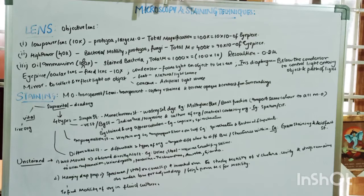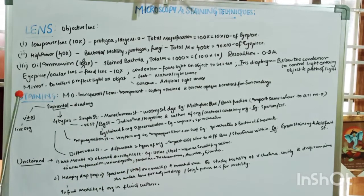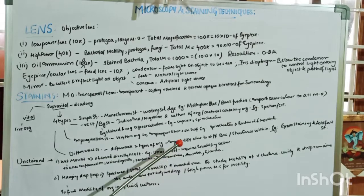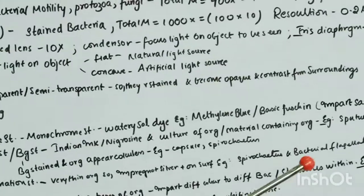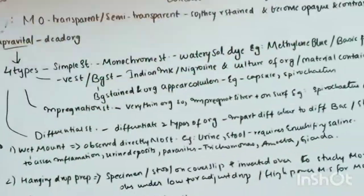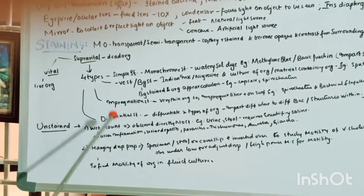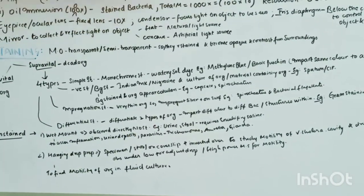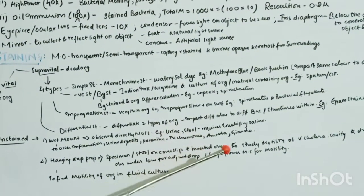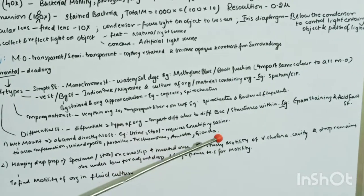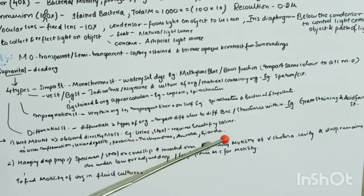Some preparations are unstained, like wet mount and hanging drop preparation. Wet mount is where the specimen is placed directly on a slide without any staining — for example, urine and stool, where stool requires normal saline spray. Wet mount is used to assess inflammation, inflammatory cells, deposits, or parasites like Trichomonas, Amoeba, and Giardia.